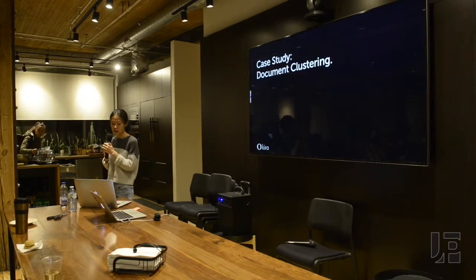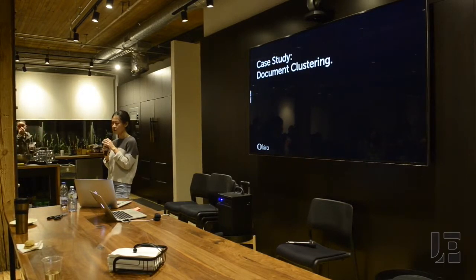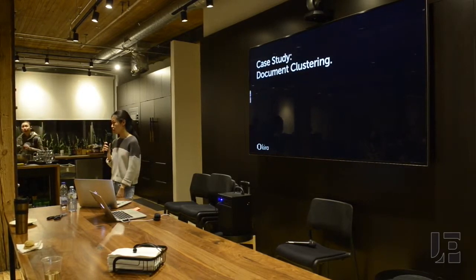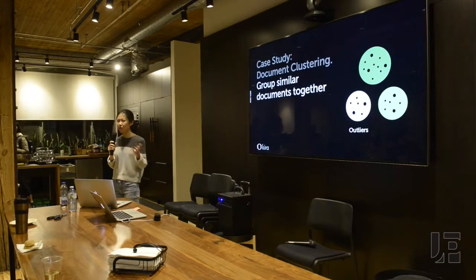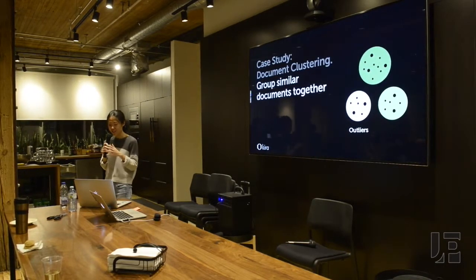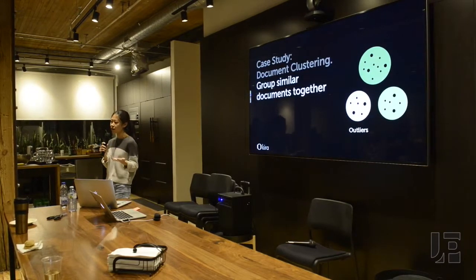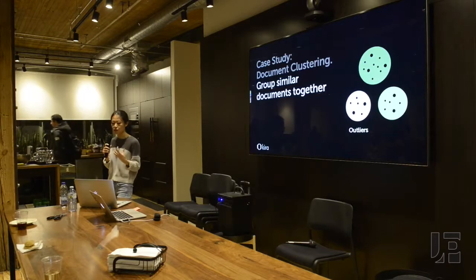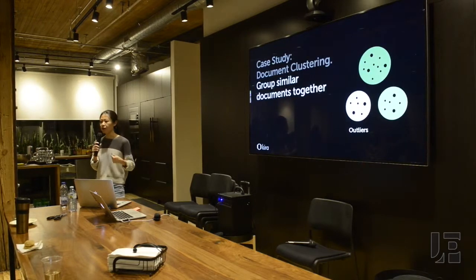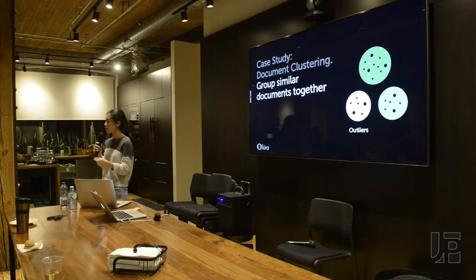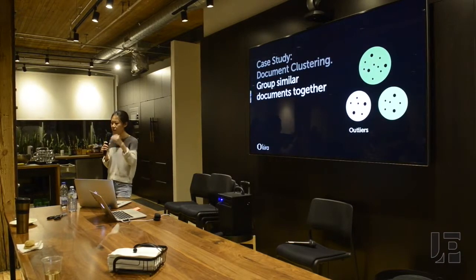This case study is when we designed something called document clustering — using an unsupervised machine learning algorithm to group similar documents together. You might be thinking, how hard is that? Interestingly, the machine groups similar documents together, but what counts as similar? If you look at all the documents it clusters, it's really hard to put a label or attribute on it. Is it the type of document? The title? The way it's formatted? It's none of a single thing — it's a combination of a lot of things.